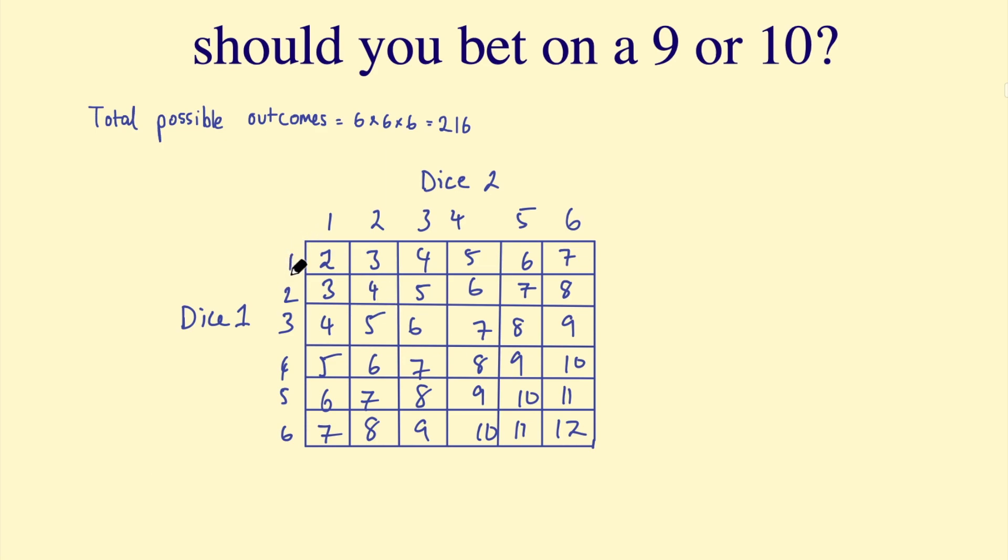So if I roll a 1 on die 1 and a 1 on die 2, I get a total of 2. Or if I roll, for example, a 4 on die 1 and a 5 on die 2, I get a total of 9. Now you might notice something about these totals.